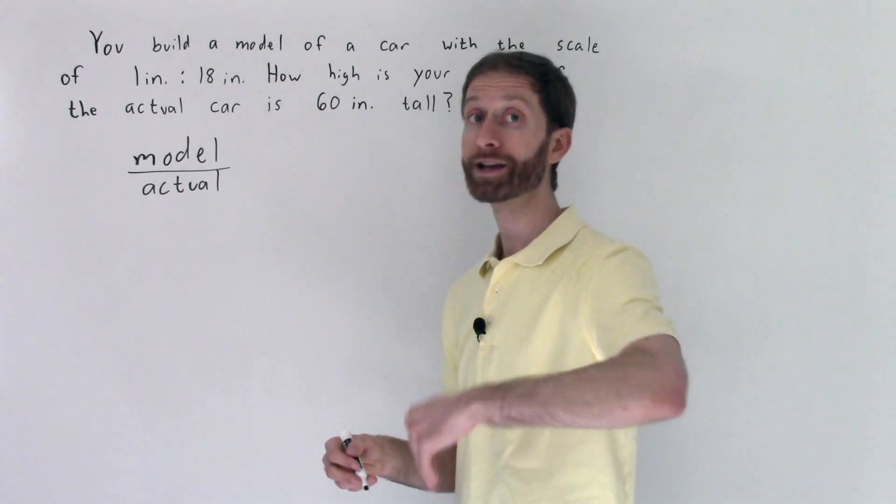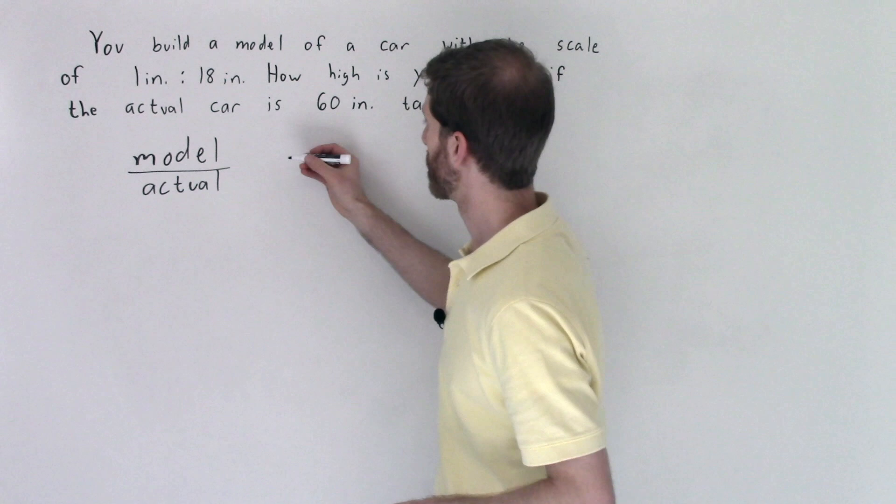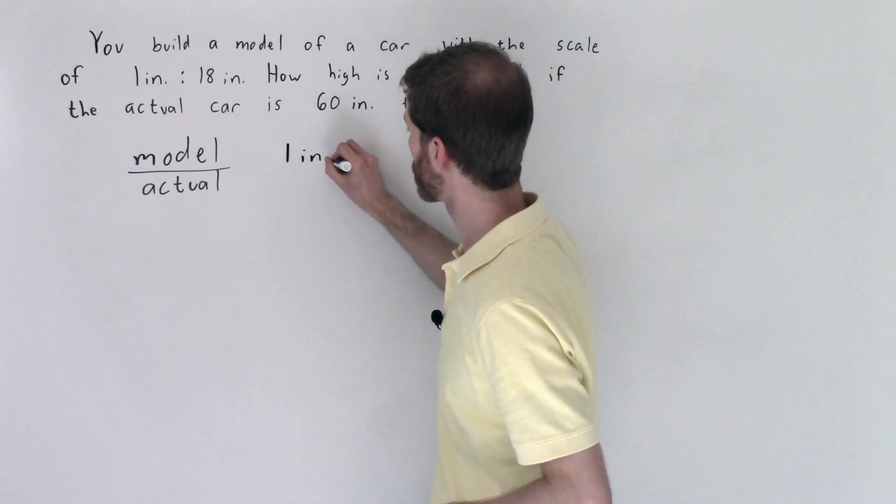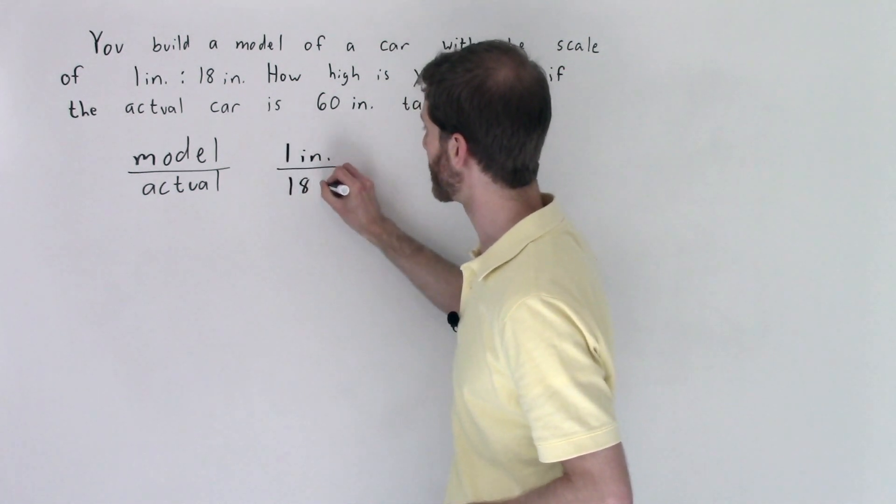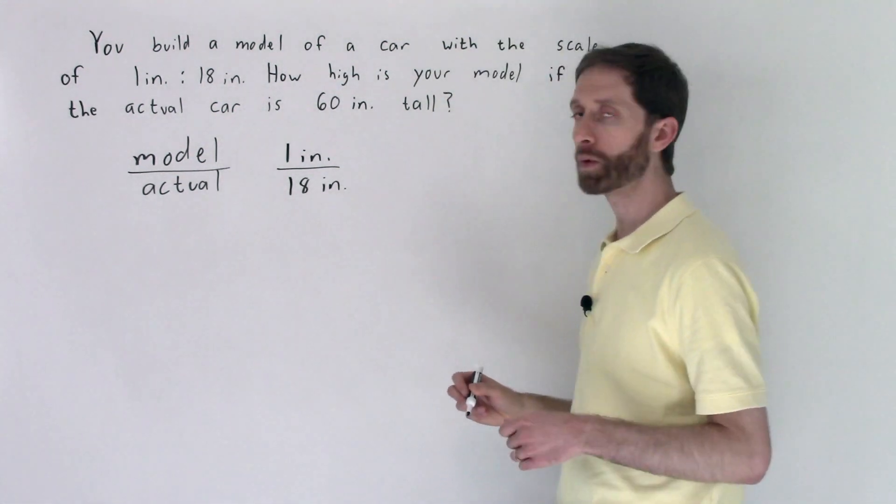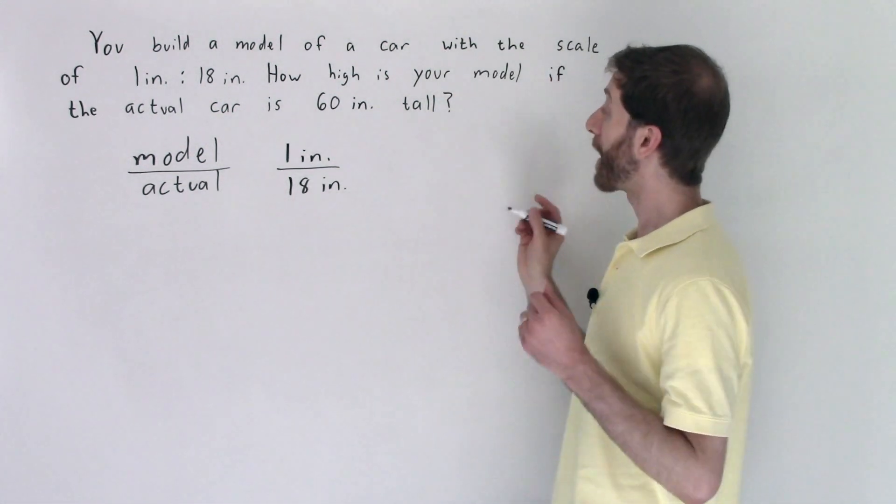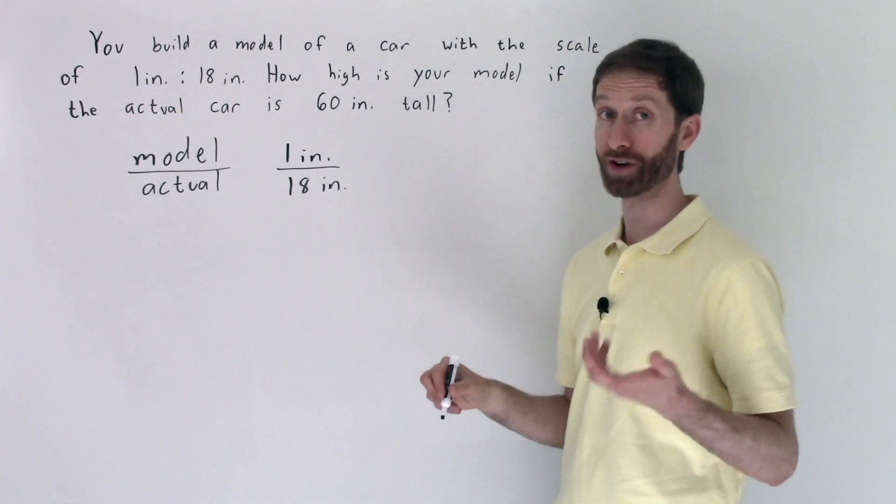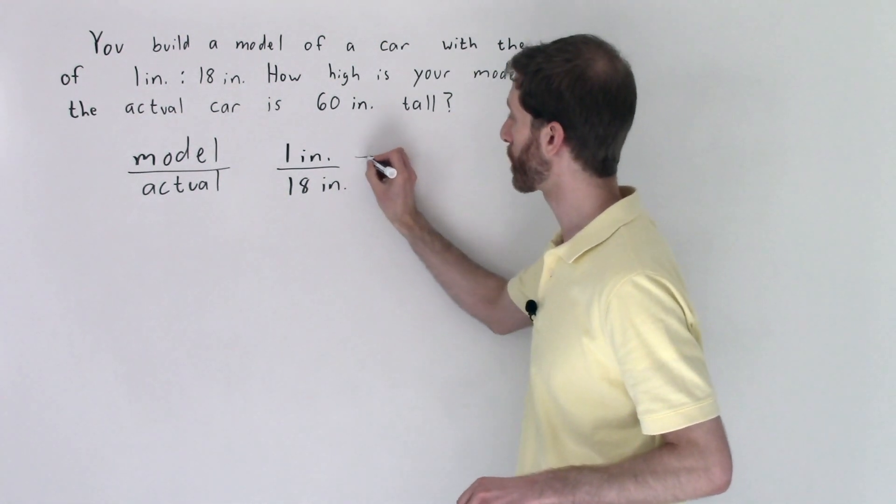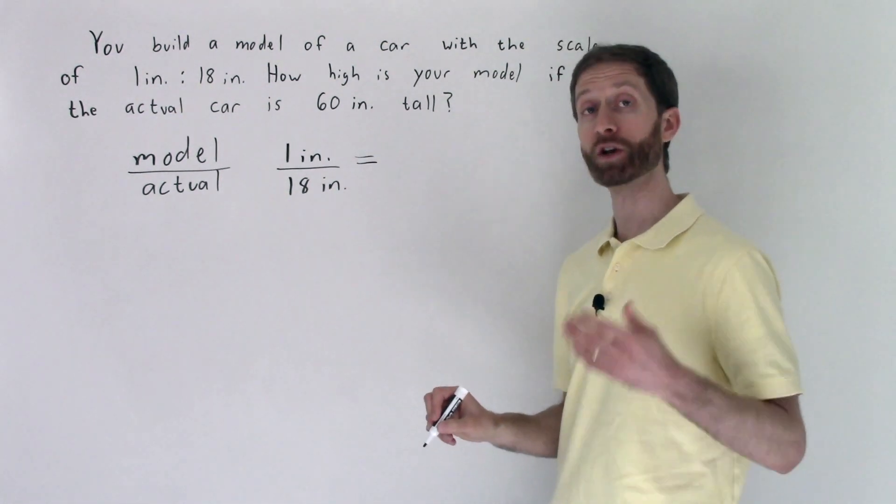So our model to actual ratio is given right here. We're told that we have one inch on the model to 18 inches on the actual. So we would have one inch compared to 18 inches is that ratio that we're operating under. We want to know how high the model needs to be if the actual car is 60 inches.